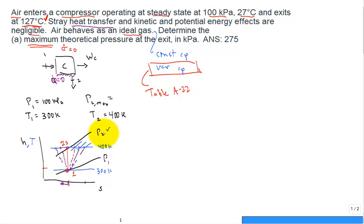So it's not applicable there. So to calculate the maximum, you would assume the minimum entropy generation, or zero. So from the second law, we have that S2 is equal to S1 plus sigma dot divided by m dot, and so we're going to assume that's equal to zero. So S1 is equal to S2, straight line up.